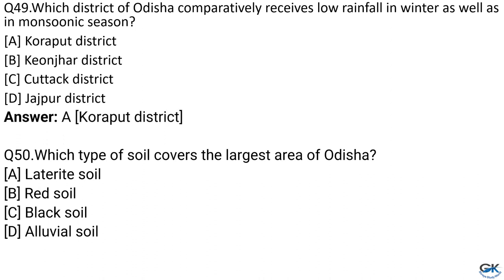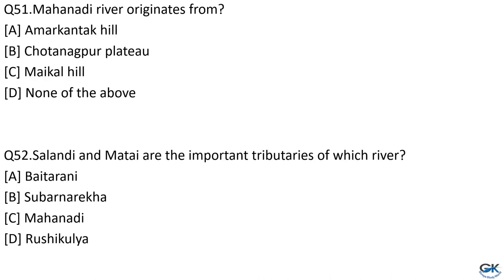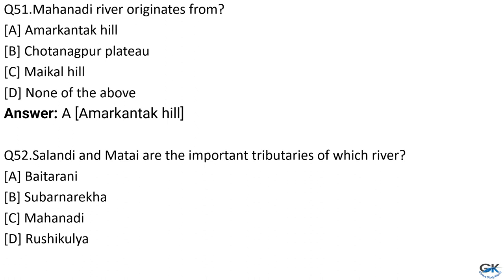Question No. 50: Which type of soil covers the largest area of Odisha? Option A: Laterite soil. Option B: Red soil. Option C: Black soil. Option D: Alluvial soil. The answer is Option B, Red soil. Question No. 51: Mahanadi river originates from which place? Option A: Amarkantak hill. Option B: Chhotanagpur plateau. Option C: Maikal hill. Option D: None of the above. The answer is Option A, Amarkantak hill.